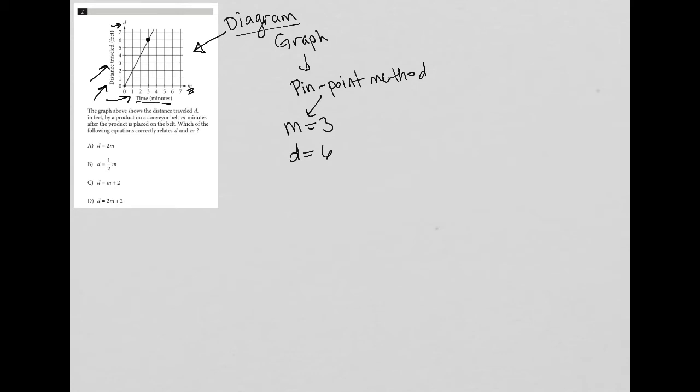Then I go to my question. The graph above shows the distance traveled D in feet by a product on a conveyor belt, M minutes after the product is placed on the belt. So we pretty much already knew all of that. Maybe not the conveyor belt part, but we knew that D was distance traveled, we knew that M was minutes. So we have the question, which is which of the following equations correctly relates D and M?